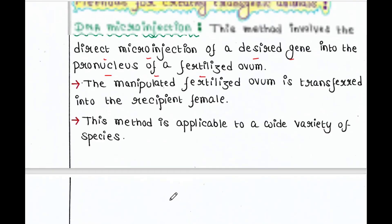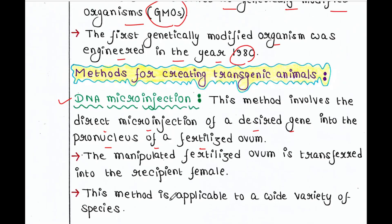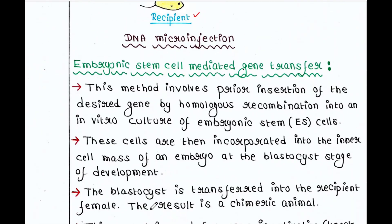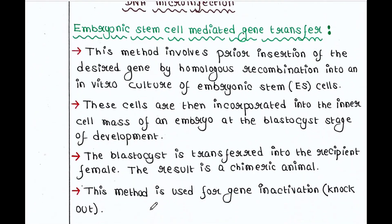The manipulated fertilized ovum — meaning after inserting the desired gene into the pronucleus — is transferred into the recipient female. This method is applicable to a variety of species. This is called DNA micro injection.